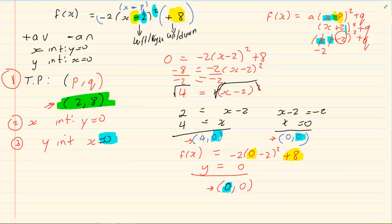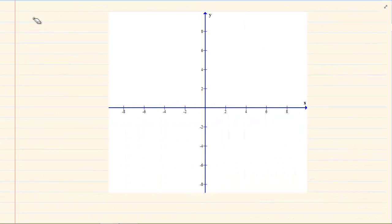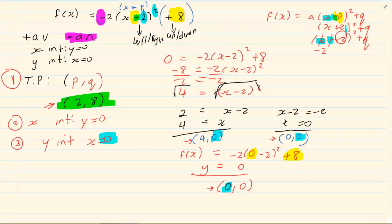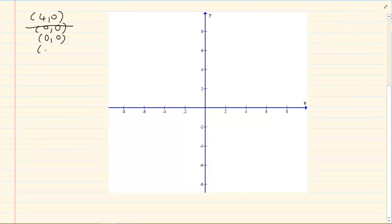Now what else should we check? We should check the sign in front. It is a negative which means that I am on a sad graph. We have 4 and 0, we have 0 and 0, 0 and 0 we had got twice because from the x intercept and the y intercept. If they are the same thing you don't have to write them down twice. Then we have the turning points which is 2 and 8. And we know that it is a sad face. At the turning point 2 and 8 it is a sad face.